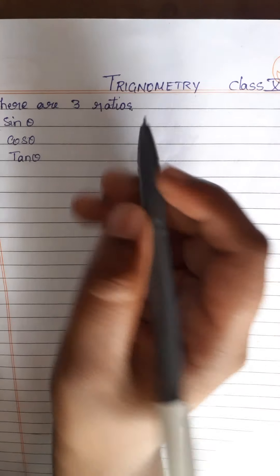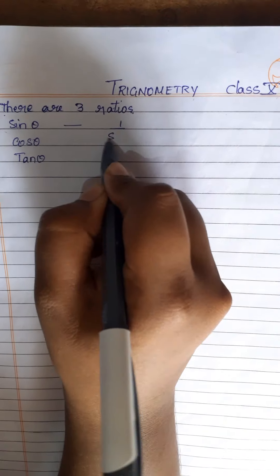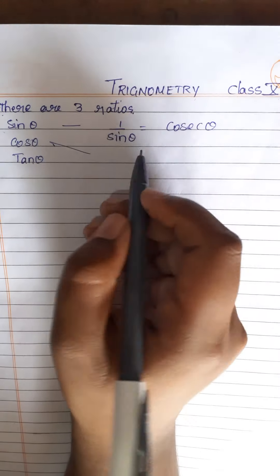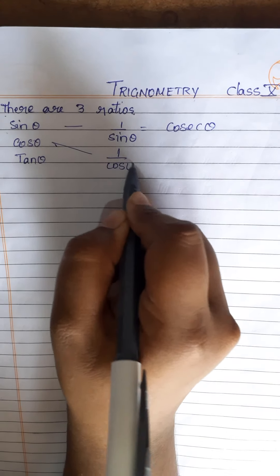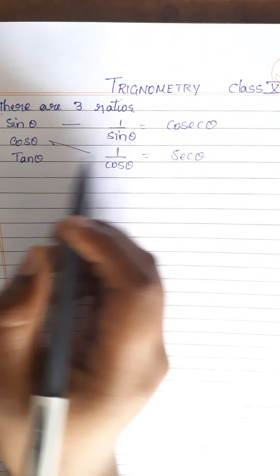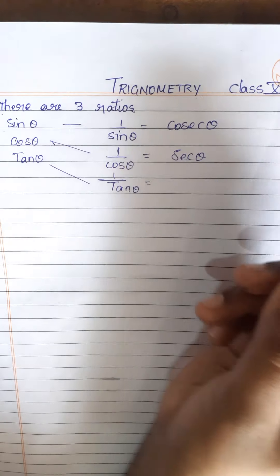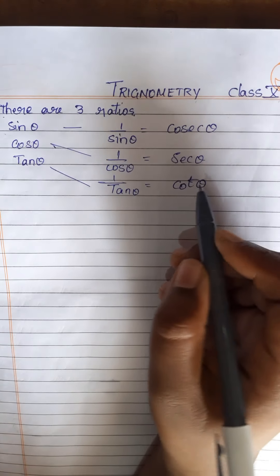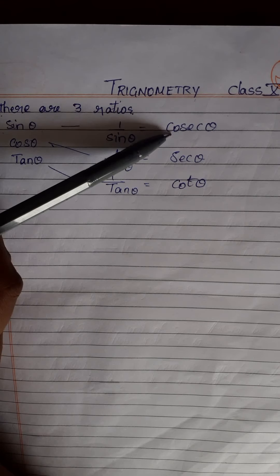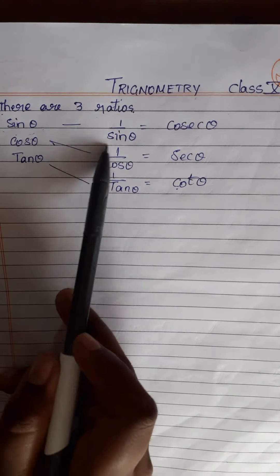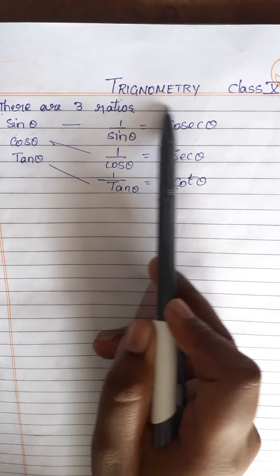Sine theta has a reciprocal, which is 1 by sine theta. Cos theta has a reciprocal, which is 1 by cos theta. And tan theta has a reciprocal, which is 1 by tan theta. These are the vital reciprocals.